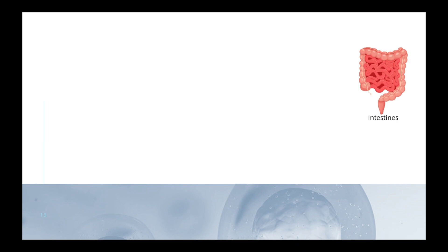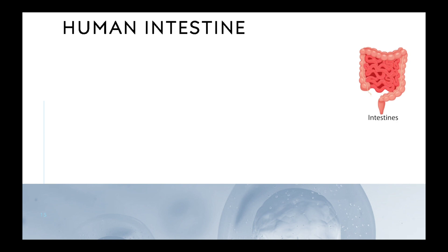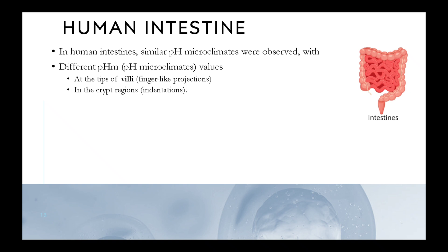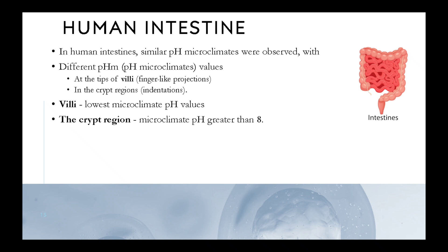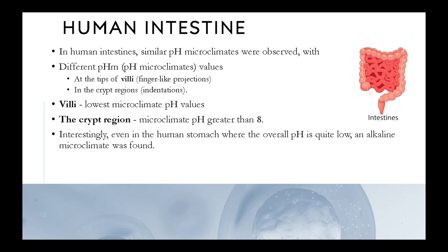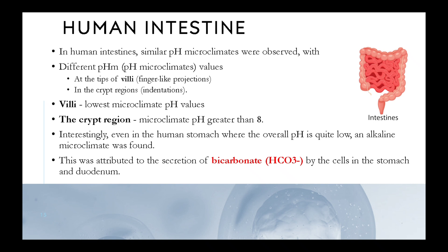In human intestines, similar pH microclimates were observed, with different pH-m values at the tips of villi (finger-like projections) and in the crypt regions (indentations). The villi had the lowest microclimate pH values, and the crypt region had a microclimate pH greater than 8. Interestingly, even in the human stomach, where the overall pH is quite low, an alkaline microclimate was found. This was attributed to the secretion of bicarbonate (HCO3⁻) by the cells in the stomach and duodenum.